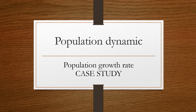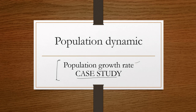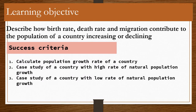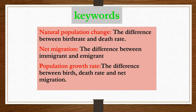Welcome to the second part of our IGCSE Geography lesson series. We are still looking at population growth rate, and we will also look at case studies on regions with high and low population growth rates. The learning objective is to describe how birth rate, death rate, and migration contribute to a country's population increasing or decreasing. The success criteria include calculating growth rate and studying case studies of countries with high and low rates of natural population growth.